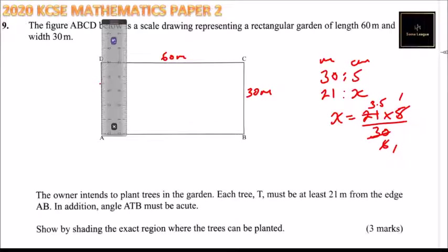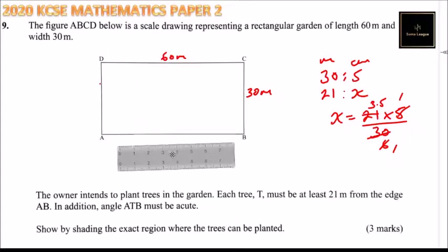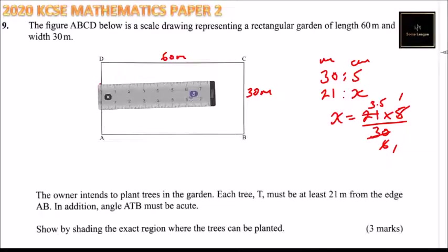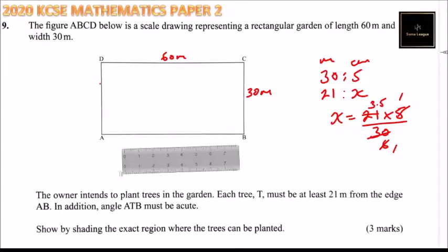So that is where we have 21 meters. So once you have that, then you can use a ruler and draw a line, and that is at least 21 meters. So this means that this is 21 meters. Now, so the trees will be in the upper small rectangle.